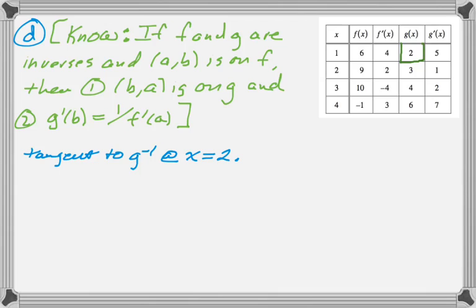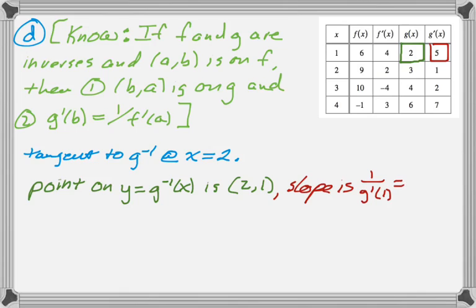So, let's see what we can do. We look up 2 in the column for g of x, right? So, if x equals 2 on the inverse function, that means it's a y value on the original function. So, we find 2 in the table. That corresponds to x equals 1. So, we know the point 2, 1 is on the inverse. And then we find the slope that goes along with that row, and it's 5. So, the slope of g of x at x equals 1 is 5, which means the slope of g prime at x equals 2 is 1 over g prime of 1, or 1 fifth.